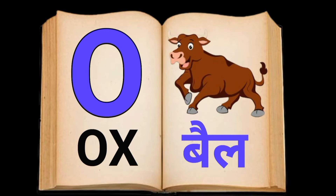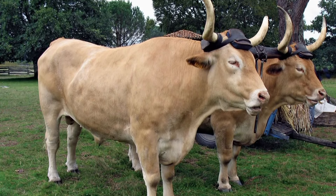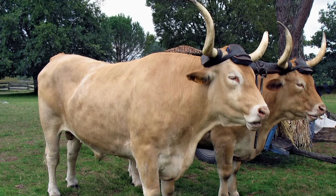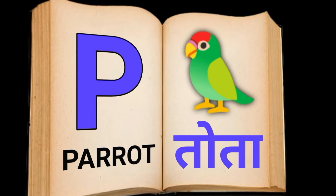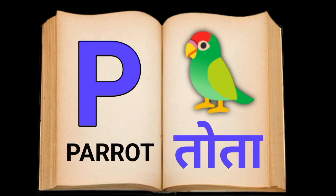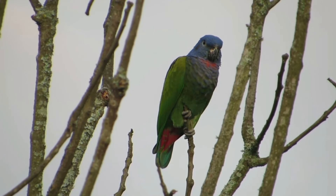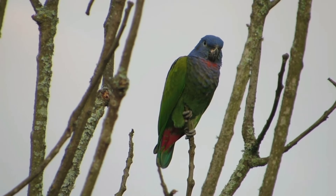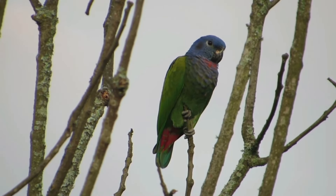O for Ox, Ox means bail. P for Parrot, Parrot means tota.